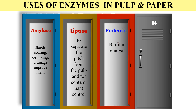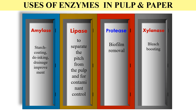Next are proteases, which are used for biofilm removal — when certain microbes are present in the paper and pulp industry, their biofilm is removed by these proteases. And the next example is xylanase, which is used in the bleaching process to boost bleaching.